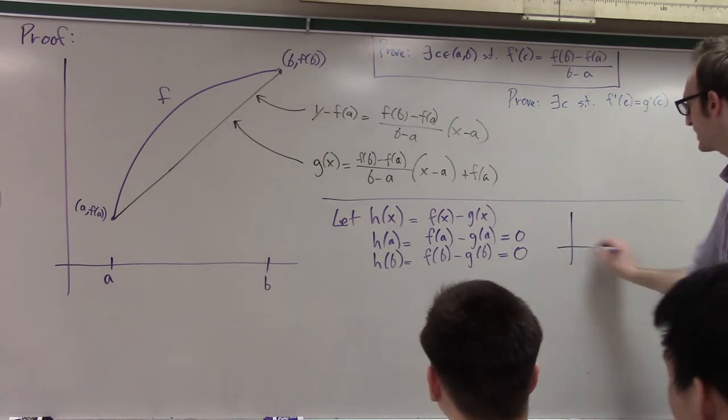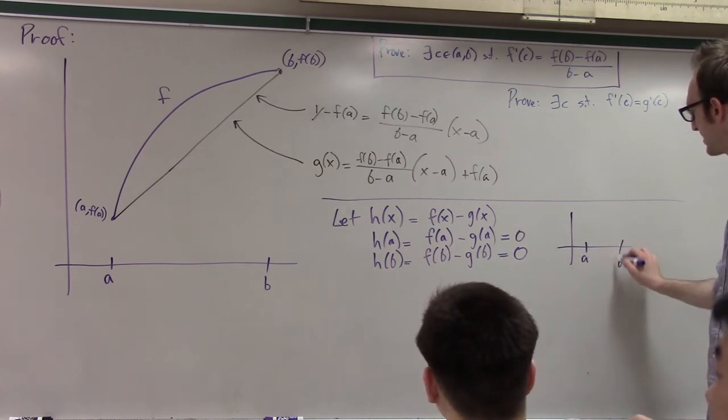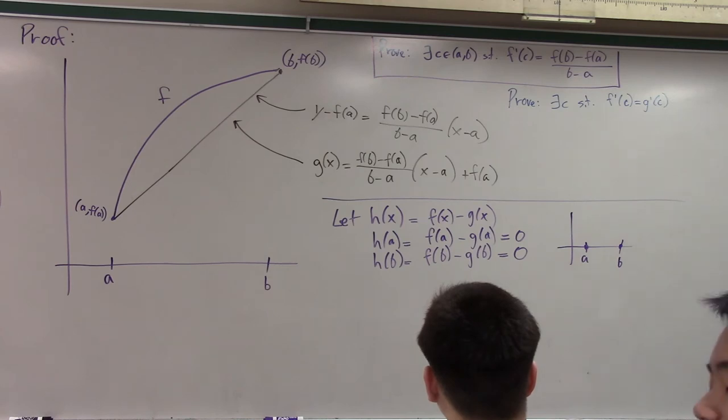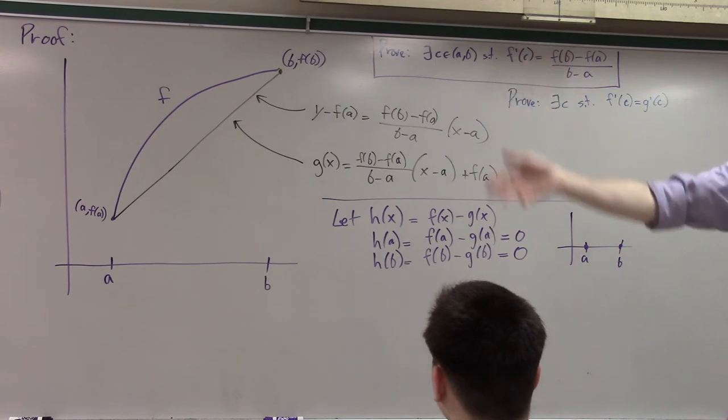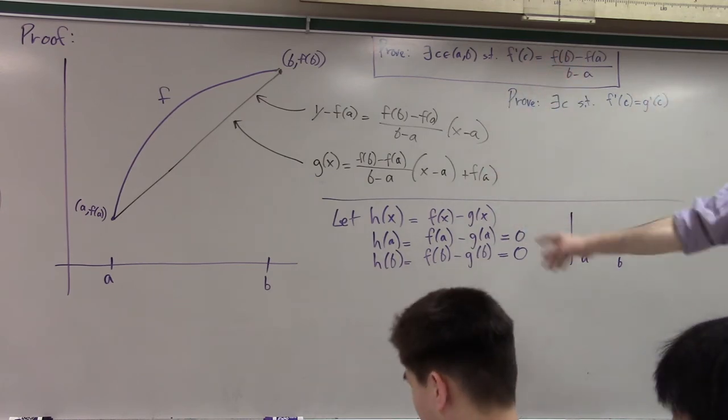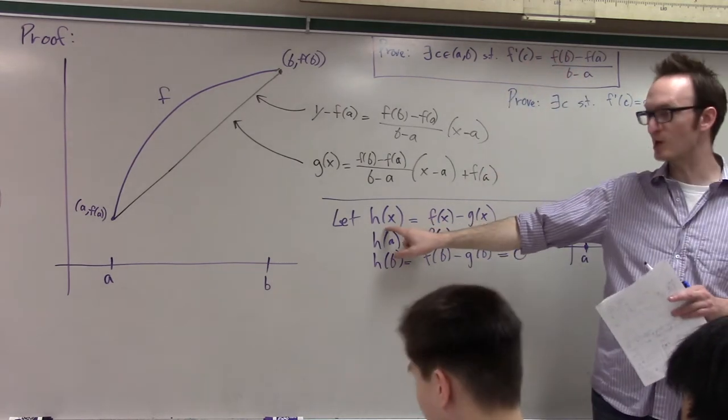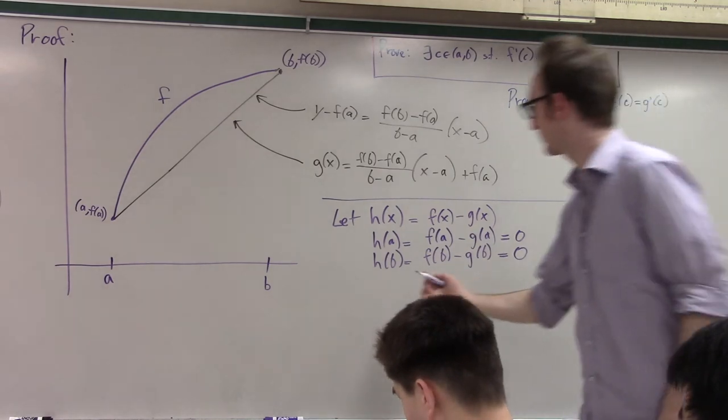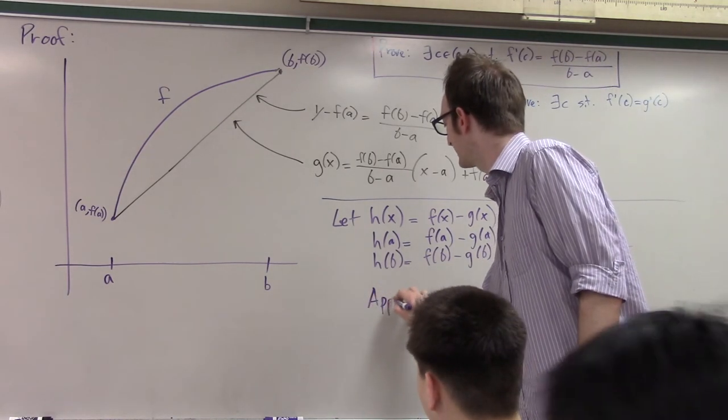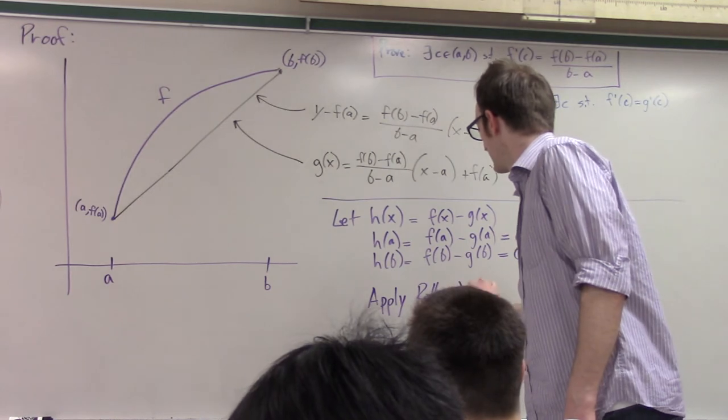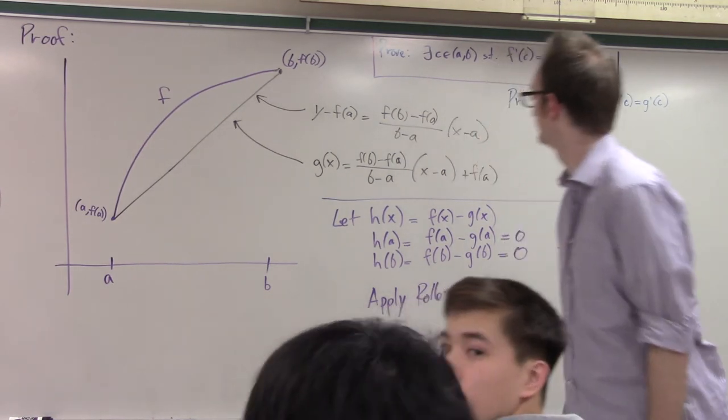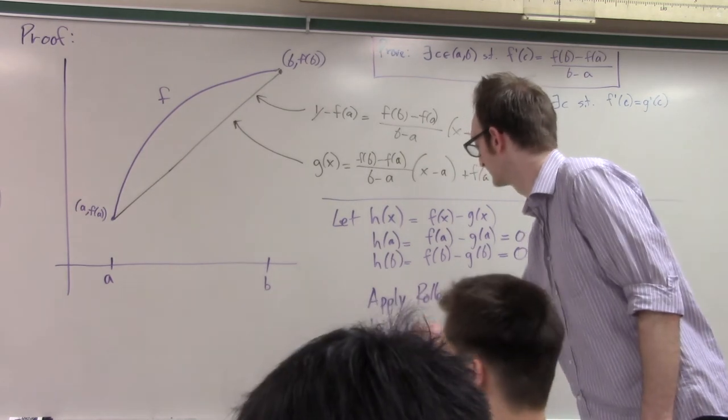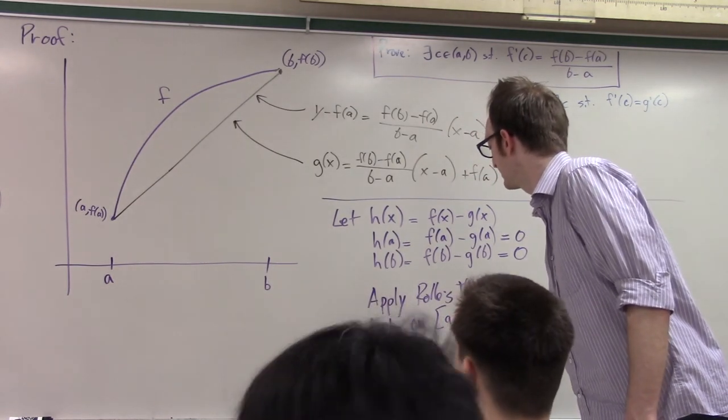Look, I now have this function, H, which at two separate points is the same. And okay, I'm too lazy to write this all out, but F, by assumption, is continuous and differentiable. G is just a line. It's continuous and differentiable. So the F minus G function must also be continuous and differentiable. And so what I'm going to do right now is simply apply Rolle's theorem to H on the interval A, B. And what does Rolle's theorem say?